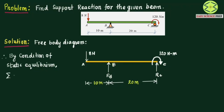The condition of static equilibrium requires that the summation of forces acting on the beam in the vertical direction, or y-direction, equals zero — meaning all vertical forces are balanced. This is the first condition we are going to use. There are no horizontal forces, so we will only use vertical forces first.